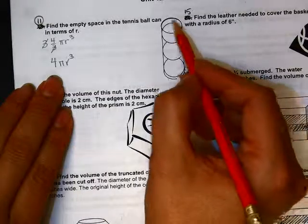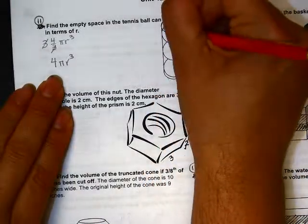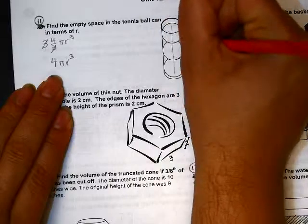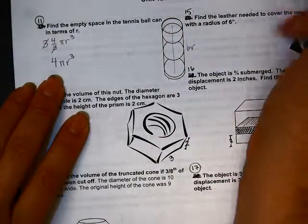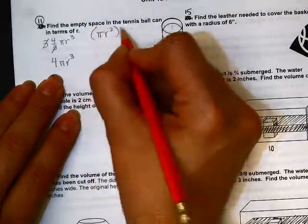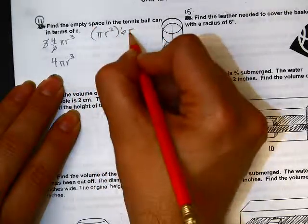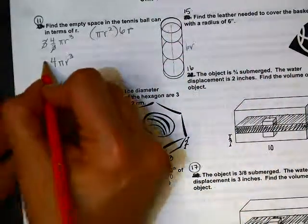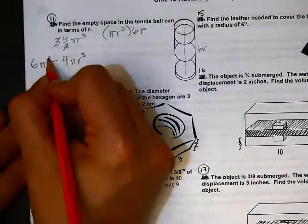And then I'm looking for the volume of the can, which is 1, 2, 3, 4, 5, 6r high. And the volume is pi r squared times the height, which gives us 6 pi r cubed.